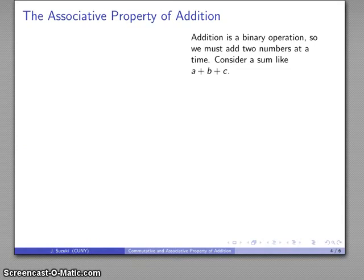Well, there's another useful property. This goes back to our first example, addition is a binary operation, and we can only ever add two numbers at a time. So if I consider a sum like a plus b plus c,